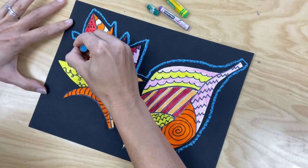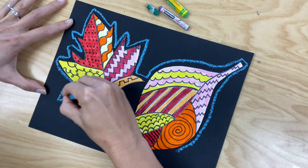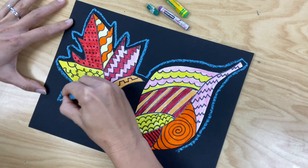And you are going to repetitively continue to outline around your two leaves using those three colors.